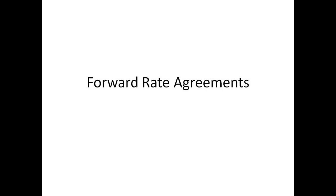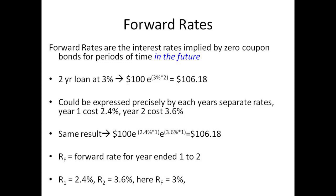This brings us to our first interest rate derivative: a forward rate agreement, also known as an FRA. Forward rates are the interest rates implied by zero-coupon bonds for periods of time in the future — the expected interest rate for some point in the future that we back out from interest rates observable in the market. For example, a two-year loan at 3% would be calculated as 100 × e^(3% × 2) = $106.18.